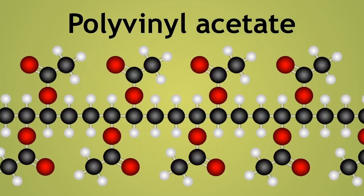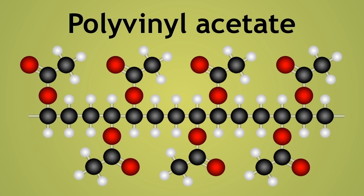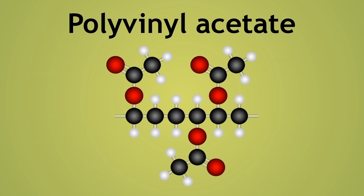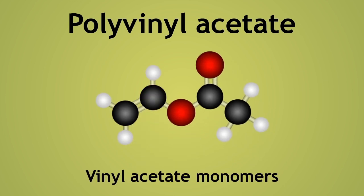Regular school glue, or PVA glue, is polyvinyl acetate, a synthetic polymer made from repeating units of vinyl acetate monomers.